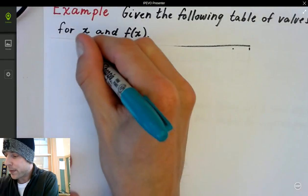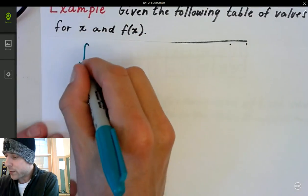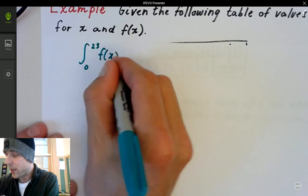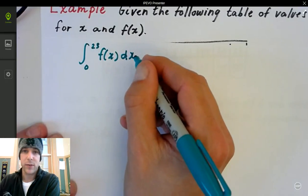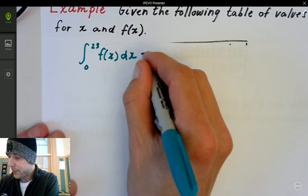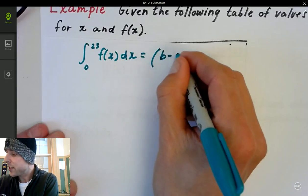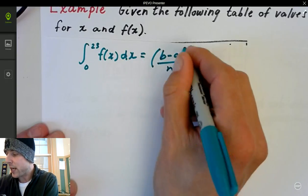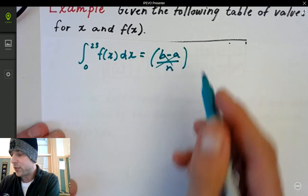So when we go from zero to 23 of our function, and we want to integrate that, we want the area using left Riemann sums. We're not going to have this on the outside, b minus a over n, because it's different for everything. So we're not really going to use that.